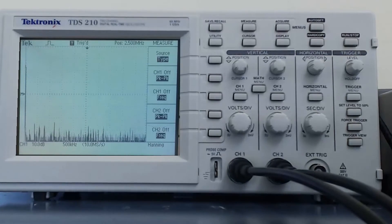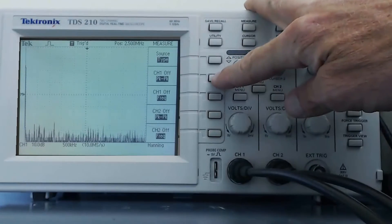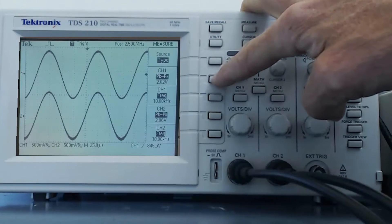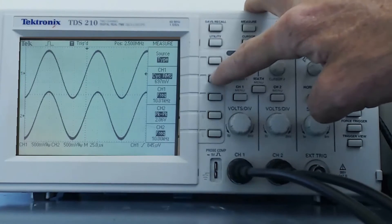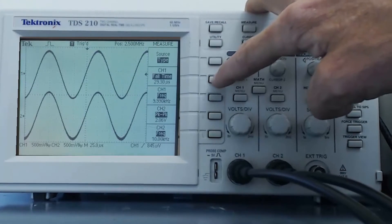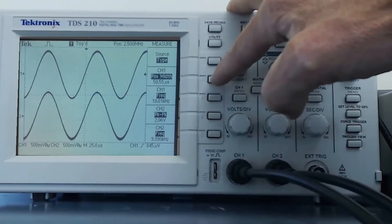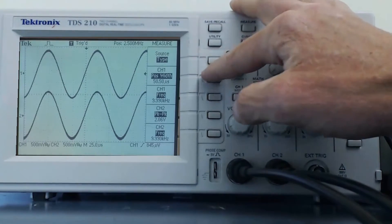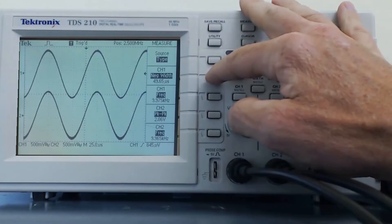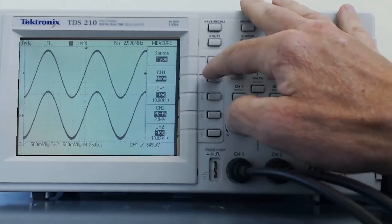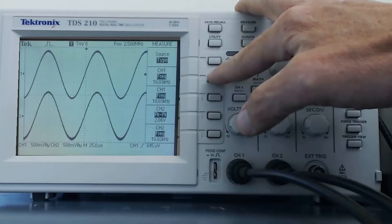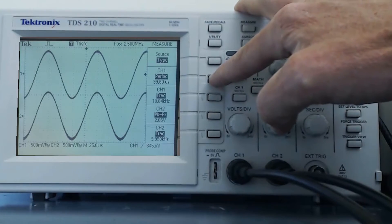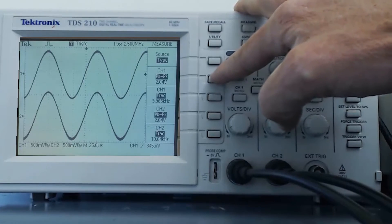I will cycle through these measurements for channel 1. The oscilloscope can display the peak-to-peak value of the waveform, the RMS value of the waveform, the rise time, the fall time, the positive width, which is the width that the signal is high, the negative width, which is the width that the signal is low, to no measurement, to the frequency, the period, the mean value, or back to the peak-to-peak value of the waveform.